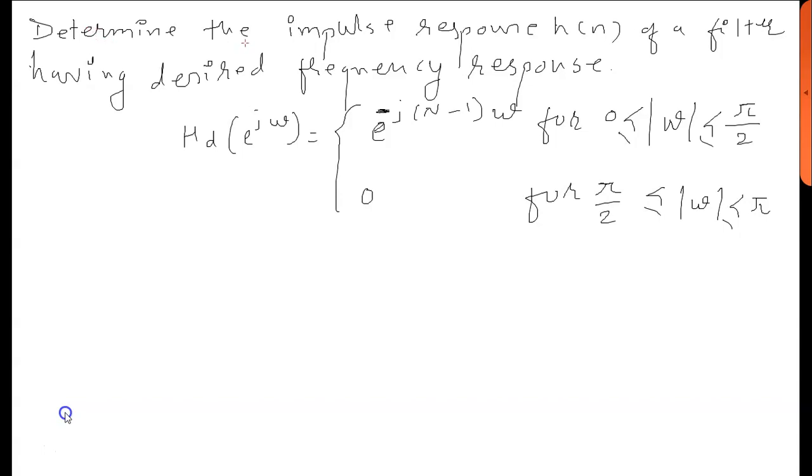The problem is to determine the impulse response h(n) of a filter having desired frequency response H_d(e^(jω)) = e^(-j(n-1)ω) for 0 ≤ |ω| ≤ π/2.